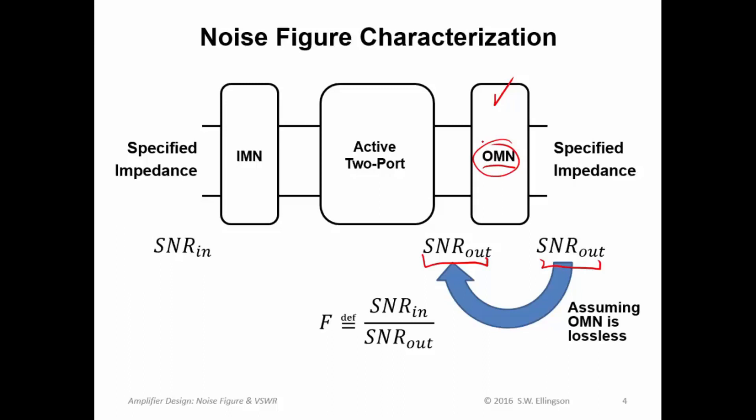Now in practice, that's not exactly true. The OMN will always have some loss. There will always be some signal-noise ratio degradation there. But for the purposes of our analysis, we can make that assumption. And in fact, in many practical cases it's safe to assume that, again because we normally use capacitors, inductors, and transmission line matching structures which have very, very low loss in this particular application. So then the noise figure can be computed as the ratio of the signal-noise ratio here to the signal-noise ratio here. And this simplifies things because we don't have to consider the output matching network.